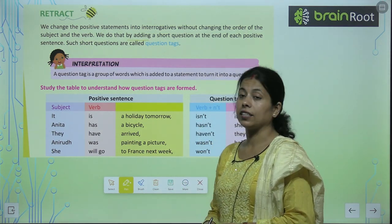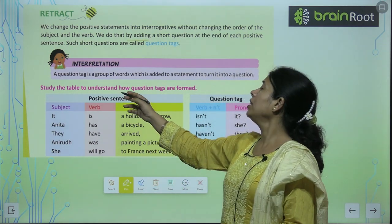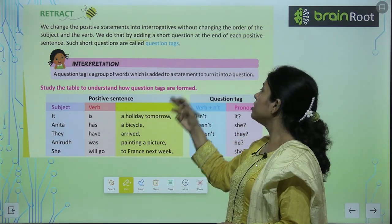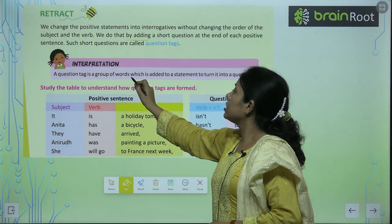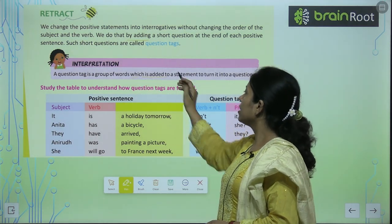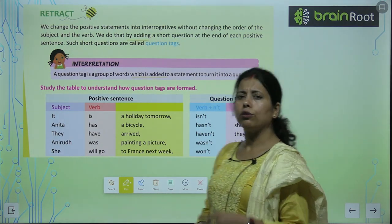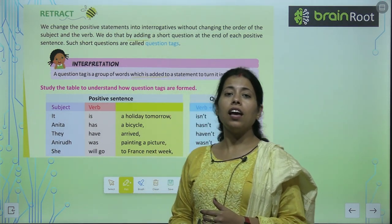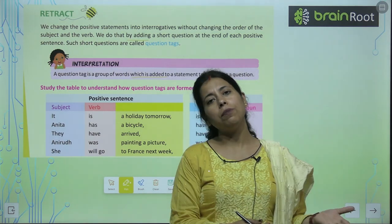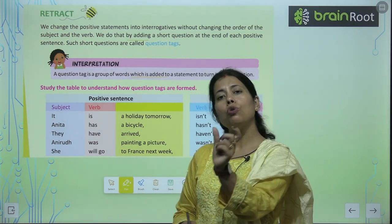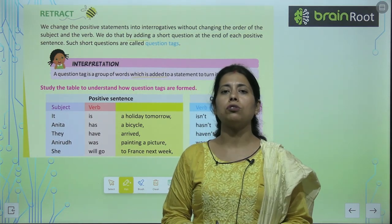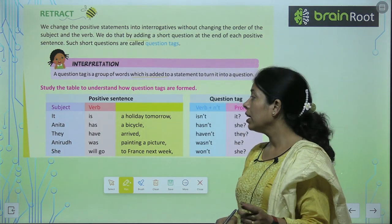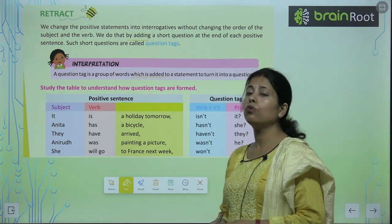वो positive से negative बन जाएगा। A question tag is a group of words which is added to the statement to turn it into a question. तो हम statement में add करते हैं और उसको question बना देते हैं — एक छोटा सा group of words। क्या है वो group of words?